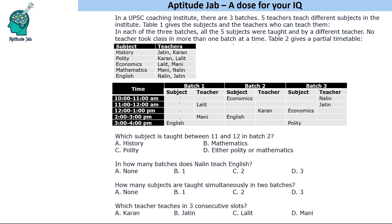No teacher took a class in more than one batch at a time. So if Nalin is taking a class in batch 3 at 10 to 11 AM, he cannot take a class in batch 1 or batch 2. Similarly, Lalit cannot be in batch 2 or Jatin cannot be in batch 2 at 11 to 12. Every subject is taught by two teachers, so if we know Lalit is teaching economics, then Money cannot teach economics.